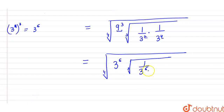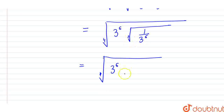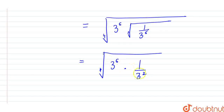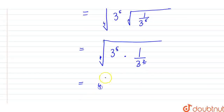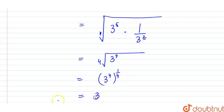We have 3 appearing 6 times in multiplication and we take the cube root, meaning we make triplets of 3 — out of 6 we can make 2 triplets. So we get the 4th root of 3 raised to the power 6, multiplied by 1 upon 3 squared. Since the bases are the same, powers subtract: 4th root of 3 raised to the power (6 minus 2) = 4th root of 3 to the power 4, which equals 3. So the inner value is 3.